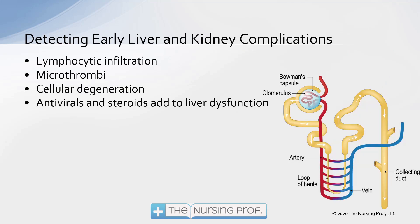Liver and kidney complications — these are the filters of the body. See on the right-hand side there's the filter from the kidney, which is our glomerulus, doing all the filtering action. If we've got a bunch of virus in there causing direct damage to that filter, we're not going to be filtering the way that we should. We start to see lymphocytic infiltration — the lymphocytes go to that area to try and gobble up the virus and get rid of it, but the lymphocytes are going to get in the way and not let us filter properly.